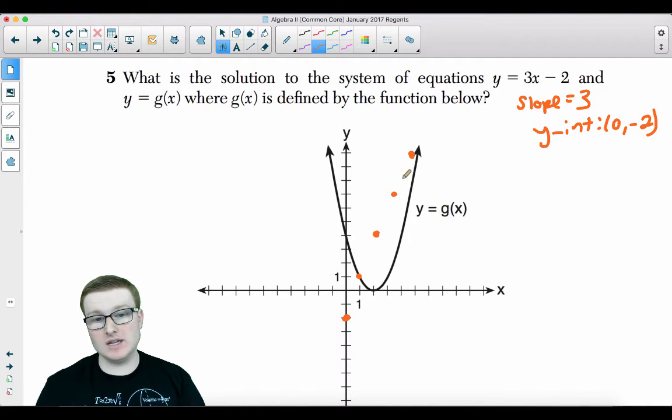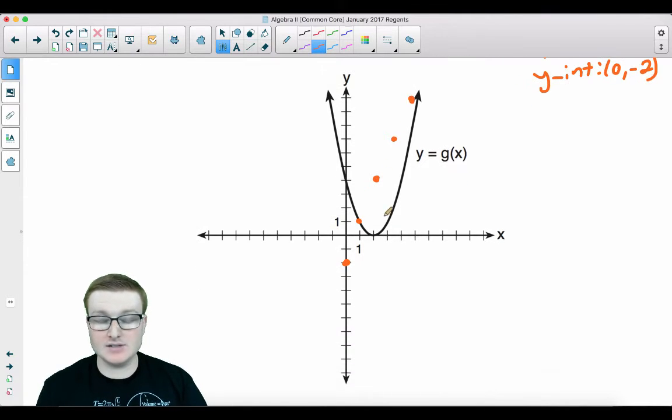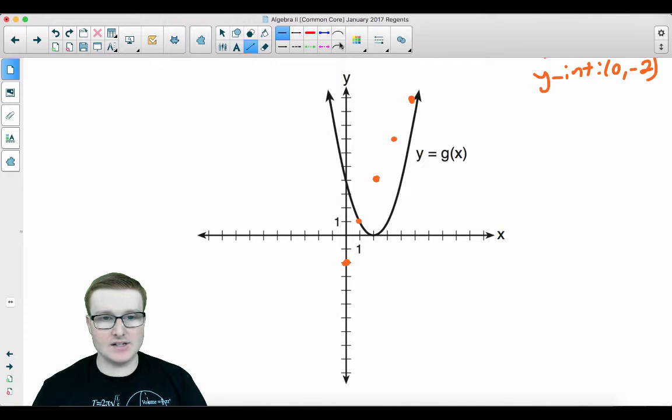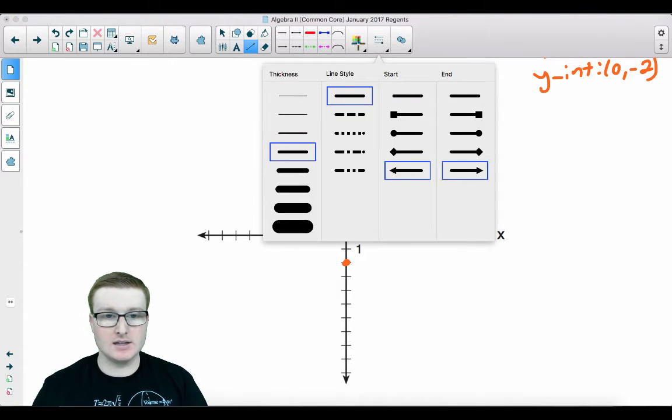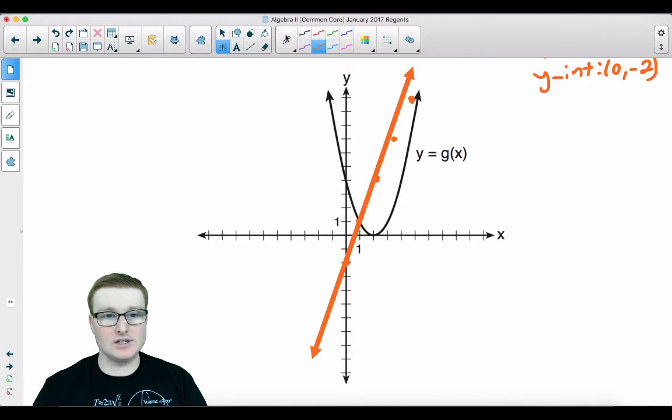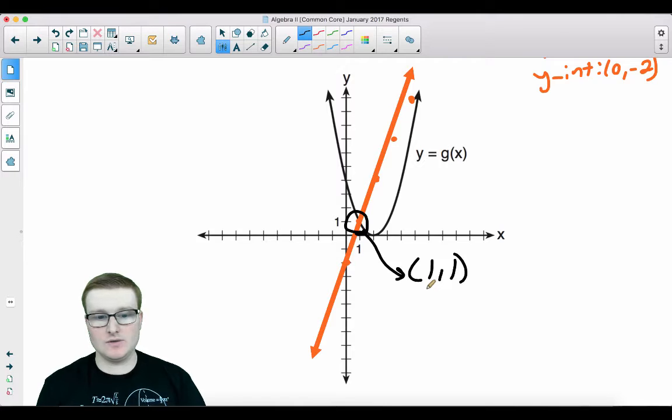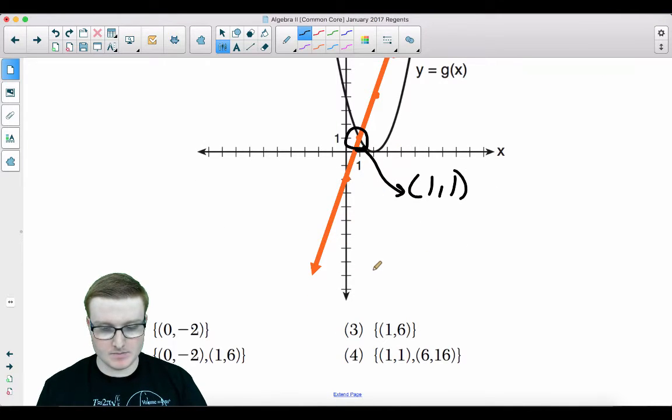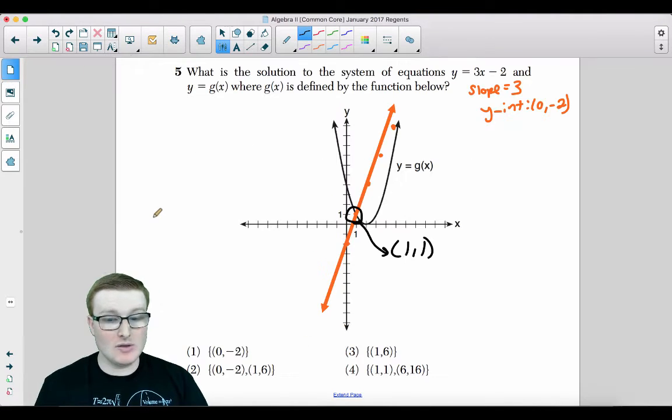So we know it's going to be intersecting somewhere up there. But regardless, we already have an intersection point. It's right there on the parabola. That point of intersection that you see right over here is the point 1, 1. So if you go down to your answer choices, 1, 1 is there. That is the only answer that has 1, 1. The other solution set is 6, 16. You see how we stopped at 5? If you go one more, it's going to be up by 16.